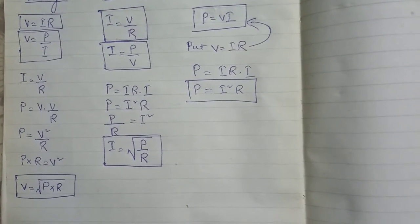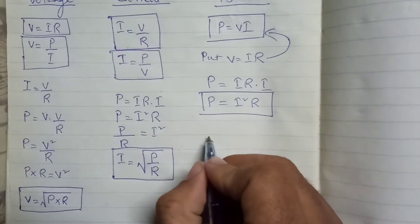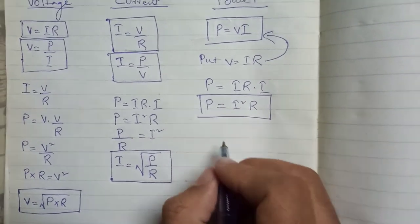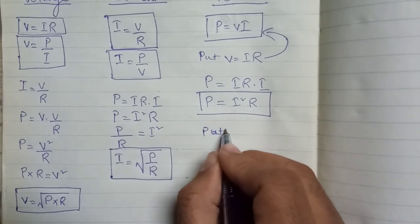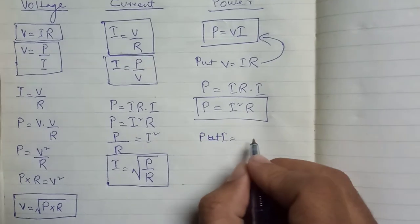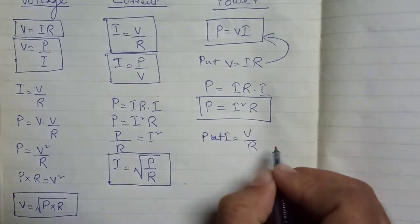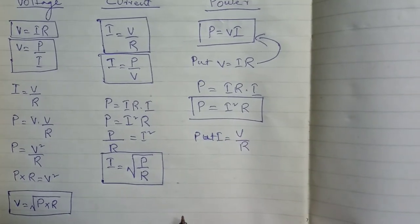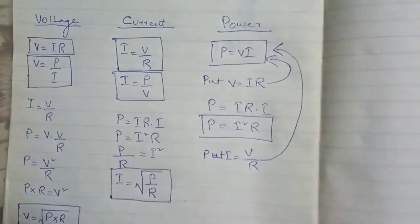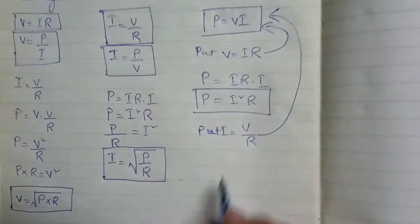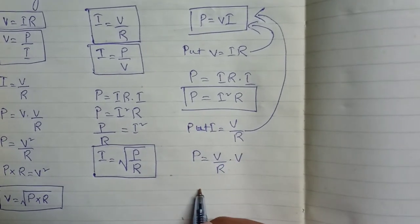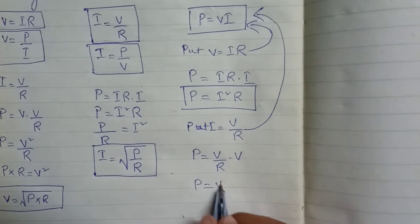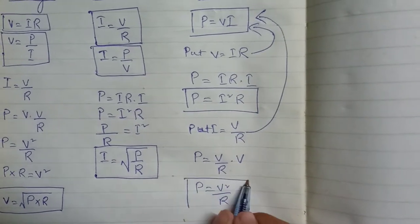For the third formula of power, put I is equal to V upon R into the power formula. So we get P is equal to V upon R times V, which becomes P is equal to V squared upon R. This is the third formula for power.